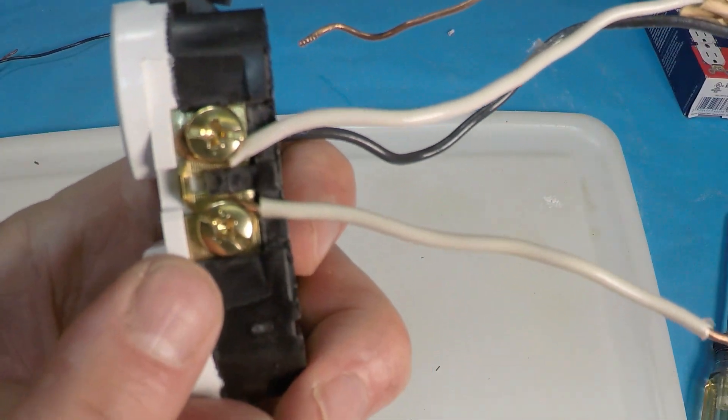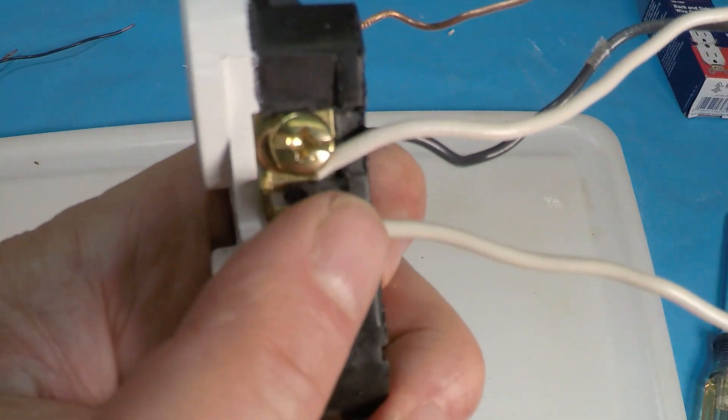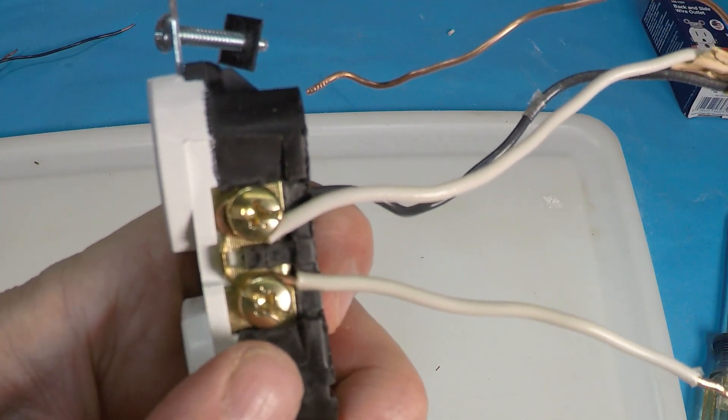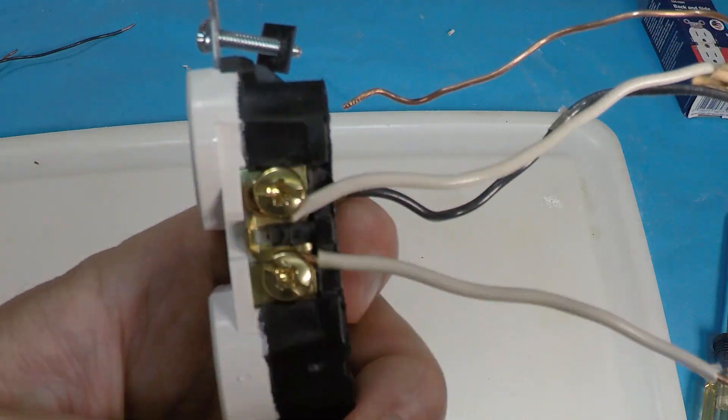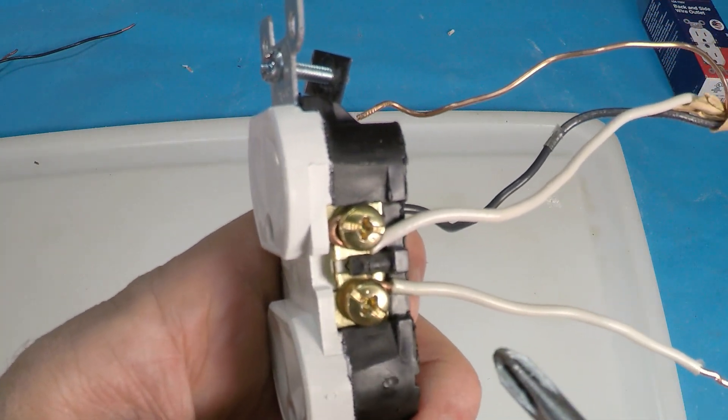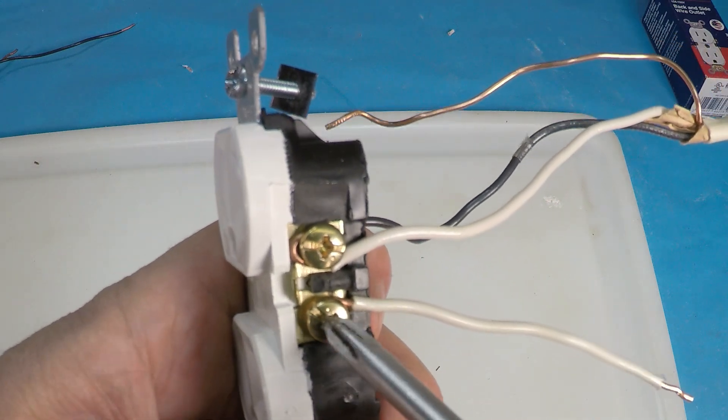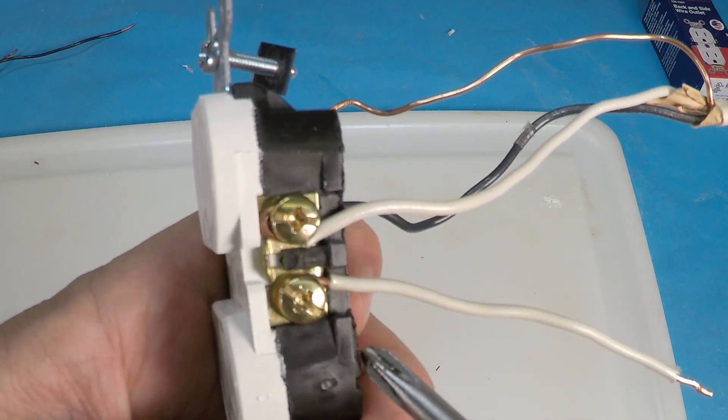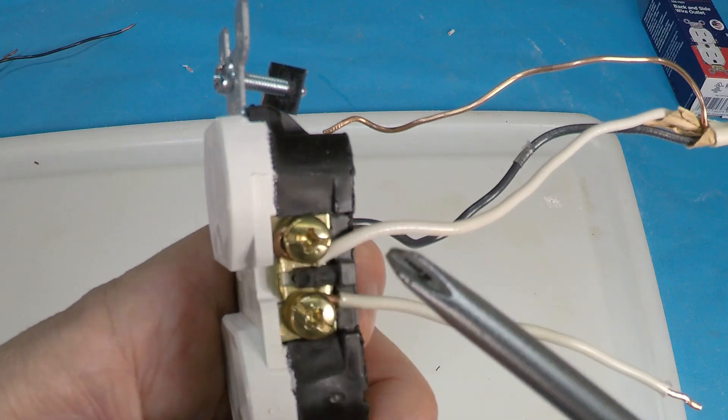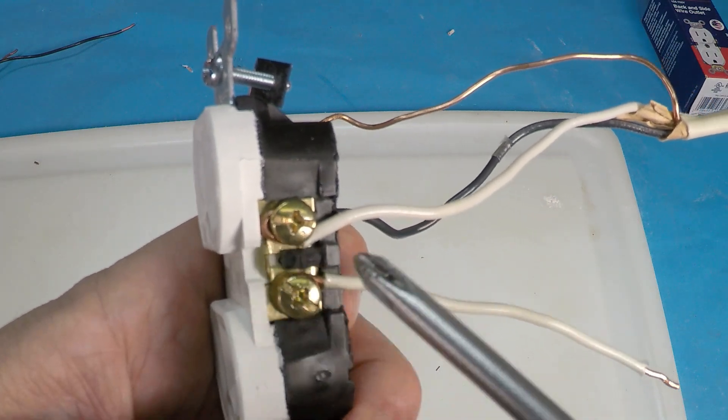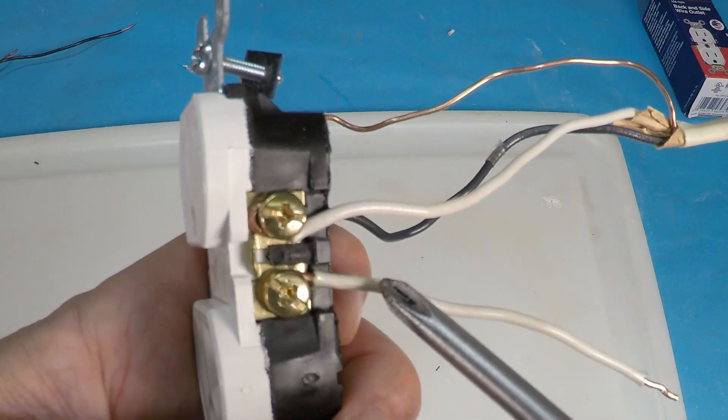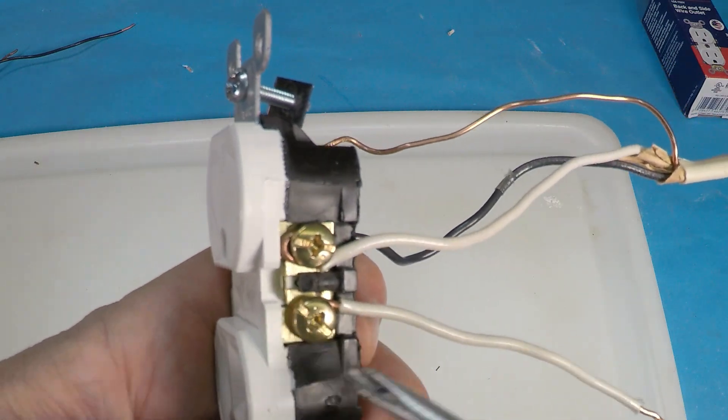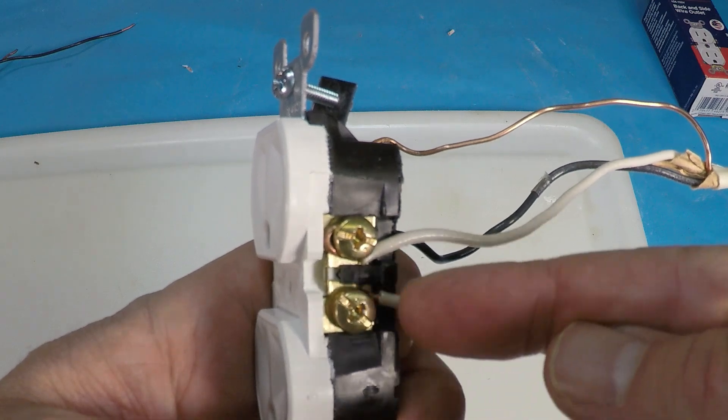Since I have this one here, you could see that this J hook is wrapped the wrong way. It's going counterclockwise, it's supposed to go clockwise. As you tighten down on it when it's the wrong way, it's going to push the wire back out. It's going to loosen it, unless you're really holding it in with your other hand.